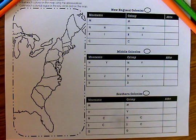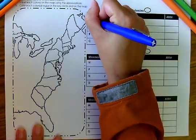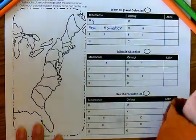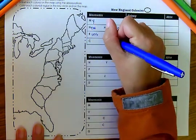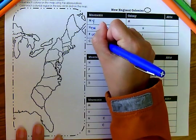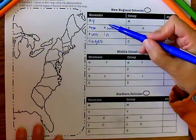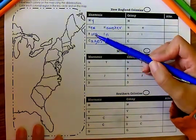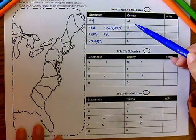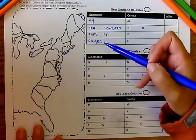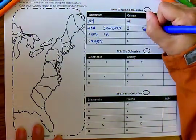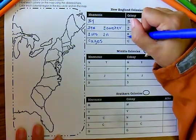We're going to start with the New England colonies. In order to remember them, our mnemonic phrase is going to be: my new hamster runs in cages. My new hamster runs in cages. If I can memorize that phrase, I'm going to easily be able to remember my colonies because those starting letters are the same starting letters for each of my colonies, as you can see in my chart.